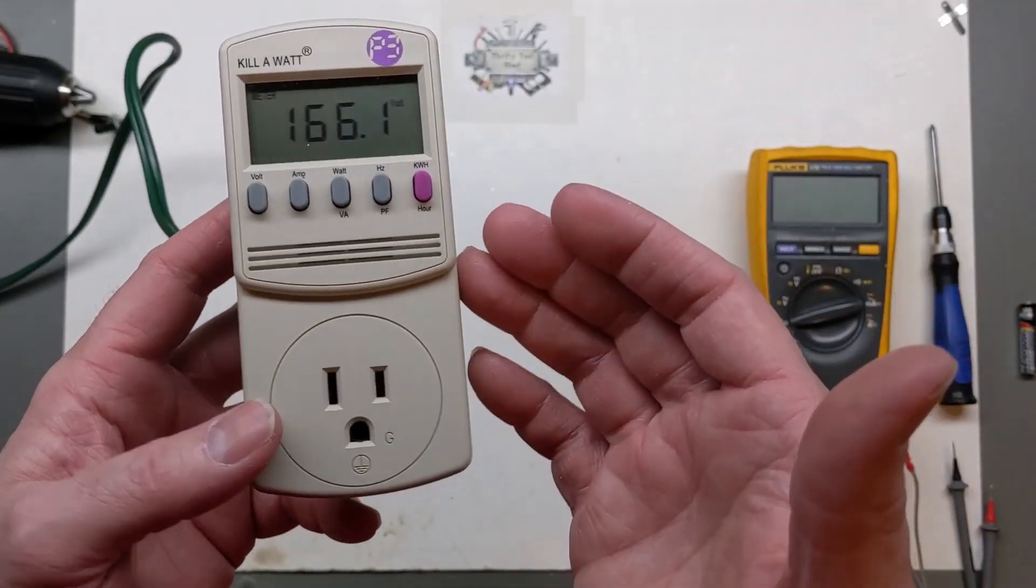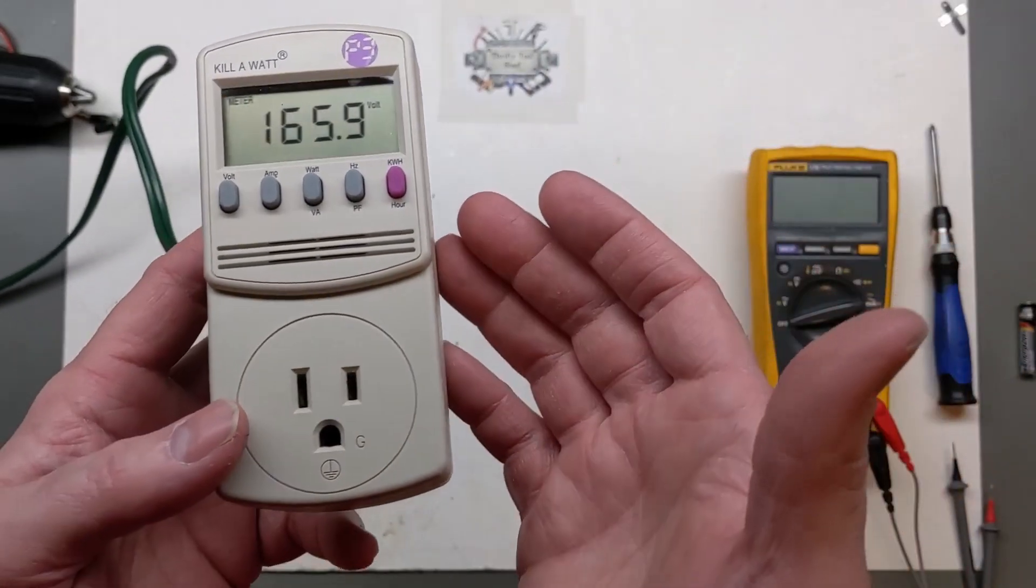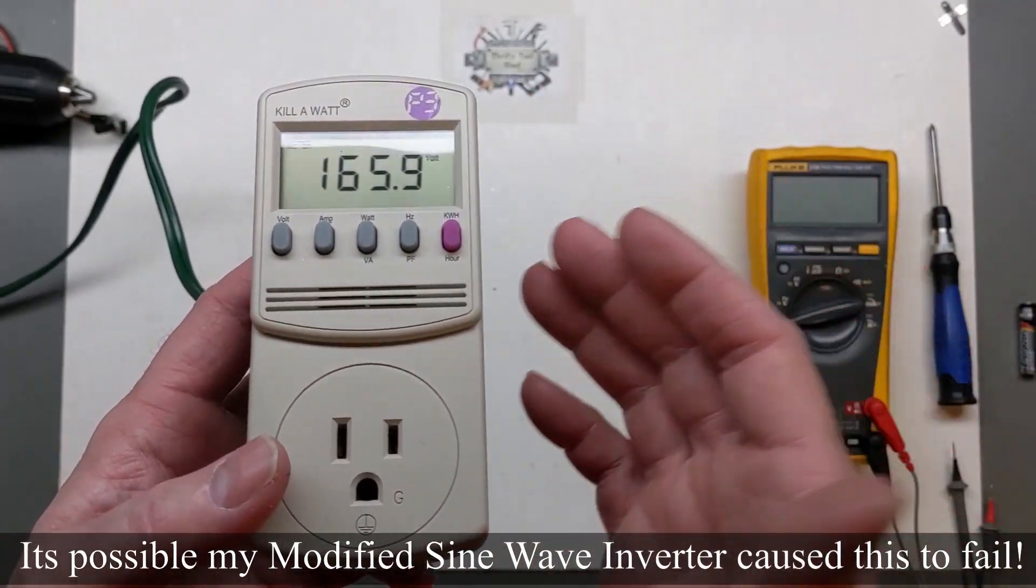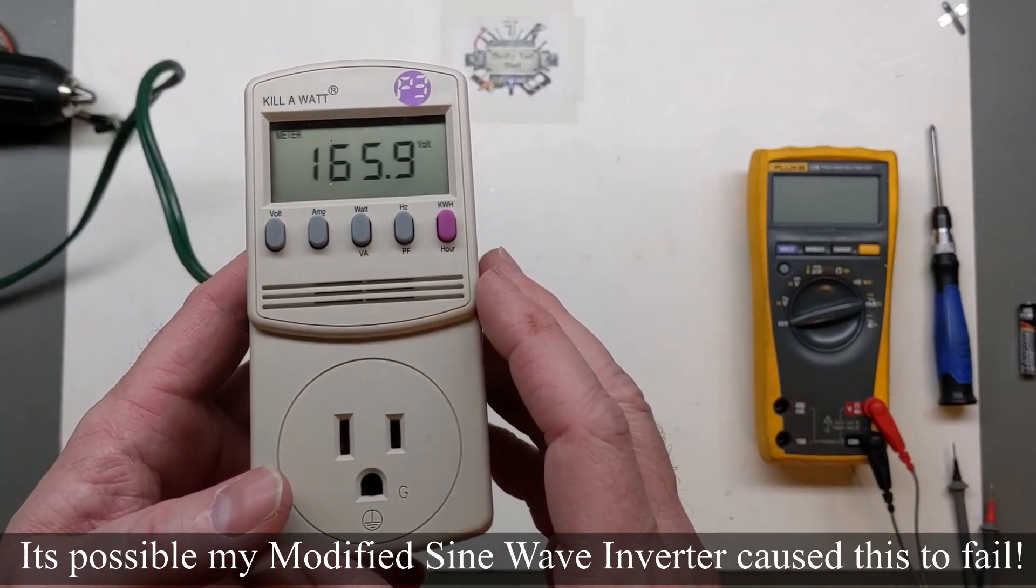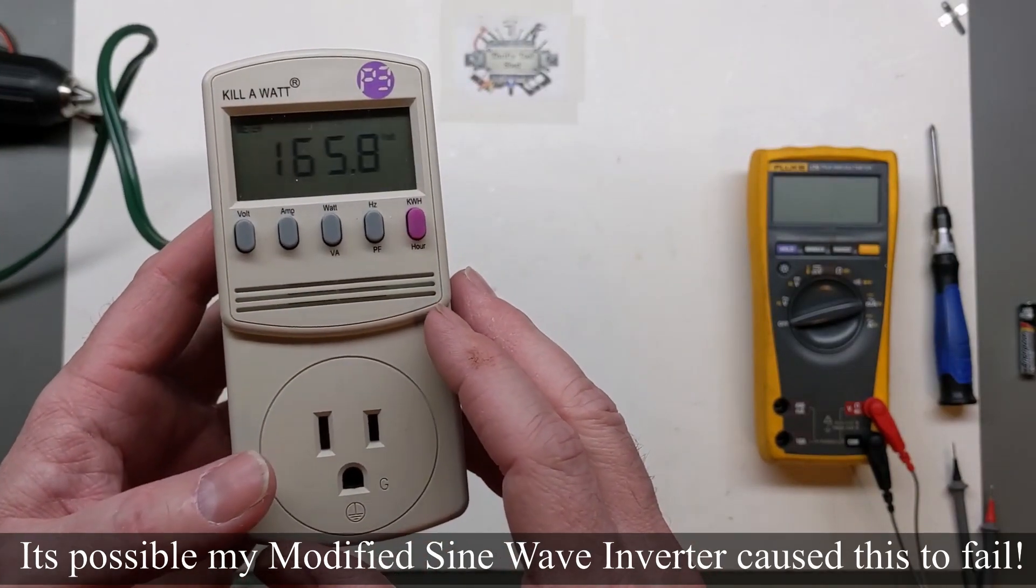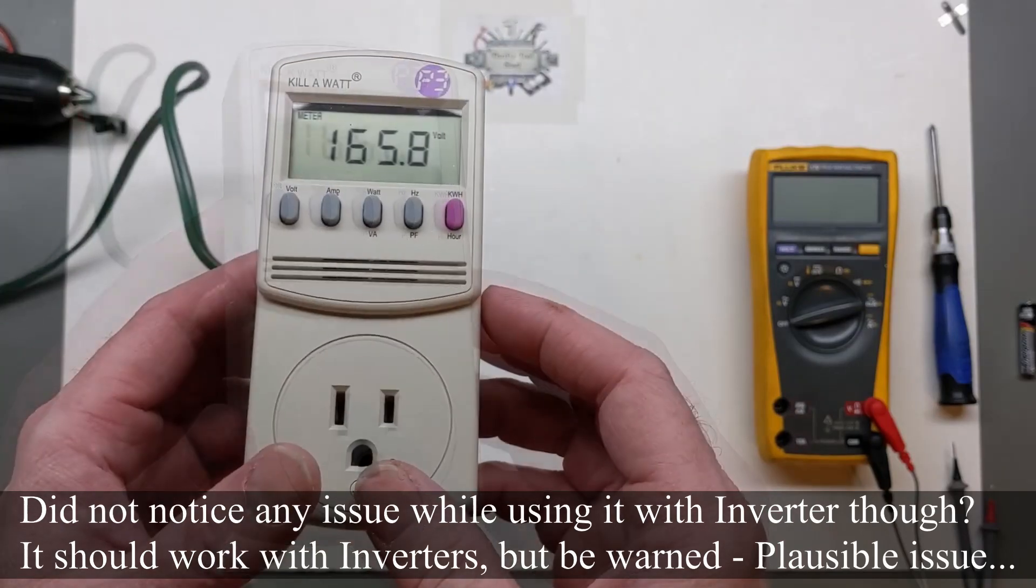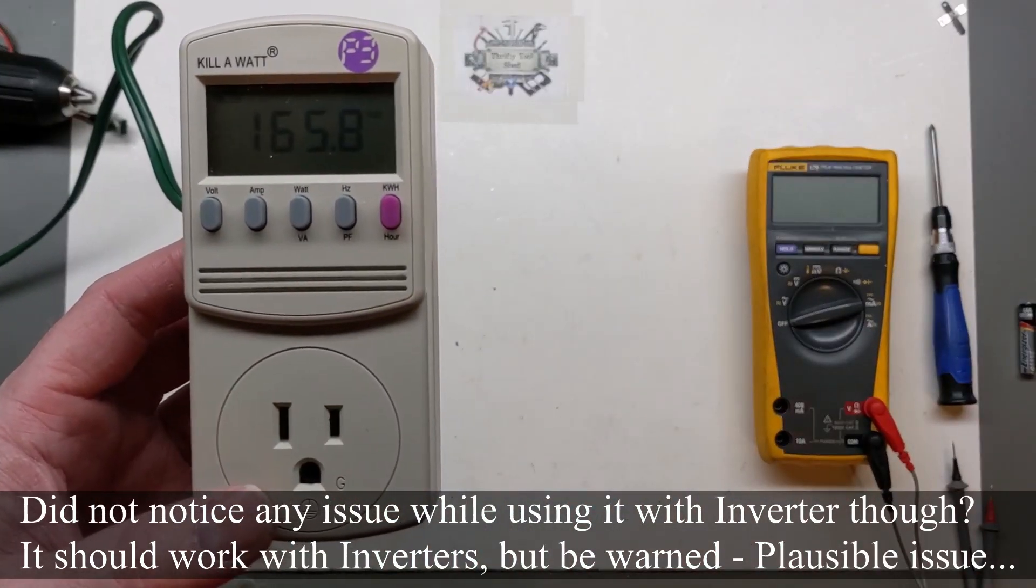When I went to use it again I noticed something kind of strange. I noticed this thing reading upwards to like 170 volts, so it's almost like it's reading the peak rather than a normal RMS. At any rate, I wanted to show you this and I just thought we'd take a look inside.